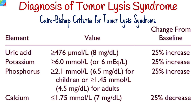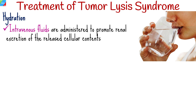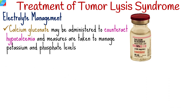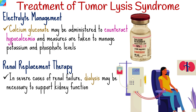The management of Tumor Lysis Syndrome involves both preventive measures and therapeutic interventions. Timely recognition and aggressive treatment are essential to prevent complications. Treatment strategies include hydration — intravenous fluids are administered to promote renal excretion of released cellular contents — as well as allopurinol or rasburicase, which help reduce uric acid levels. Calcium gluconate may be administered to counteract hypocalcemia, and measures are taken to manage potassium and phosphate levels. In severe cases of renal failure, dialysis may be necessary to support kidney function.